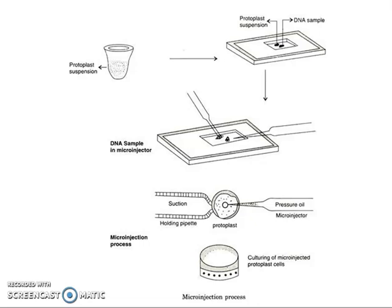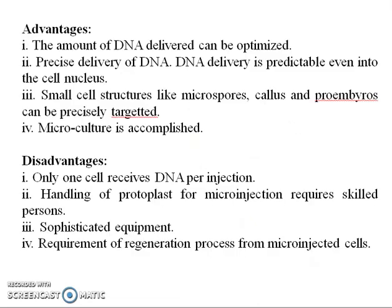This is a direct method of gene transfer with the help of micro injection. The advantages of micro injection include: the amount of DNA delivered can be optimized; precise and predictable delivery of DNA directly into the cell nucleus; small cell structures like microspores, callus, and pro-embryos can be precisely targeted; and microculture can be accomplished with the help of micro injection.